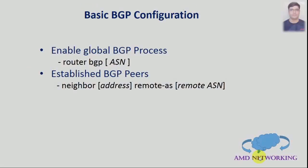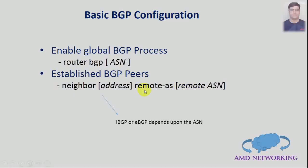First, for basic BGP configuration, enable the global BGP process. This is the first step — specify the AS (autonomous system) number. Second, establish the BGP peer relationship using the neighbor command with the remote address and remote AS number. If the local AS number and remote AS number are the same, it forms an IBGP neighbor relationship; if different, it establishes an EBGP neighbor relationship.